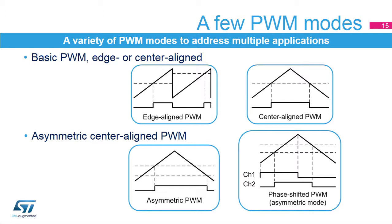A variant of the center-aligned mode is the asymmetric PWM mode where two compare registers define the turning on and off of the PWM signal. This provides higher resolution of pulse width setting, since turn on and turn off times are individually defined. It also allows the generation of phase-shifted PWM signals necessary to drive DC-DC converters based on the full bridge phase-shifted topology. In this case, the timer provides two PWM signals with identical frequency, 50% duty cycle, and a phase shift varying from 0 to 180 degrees.